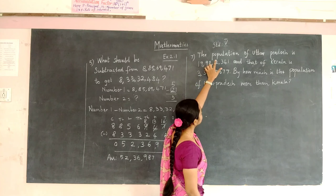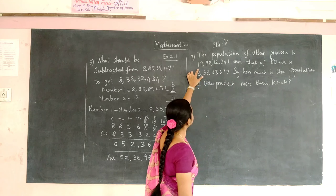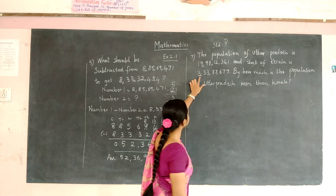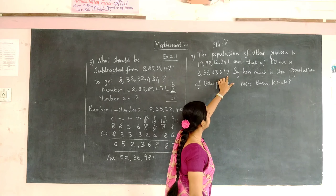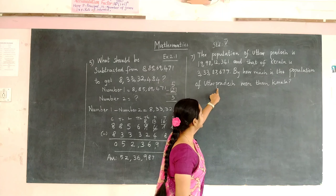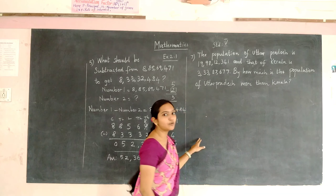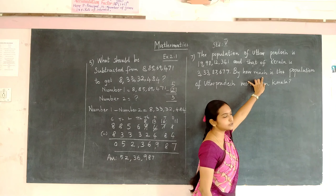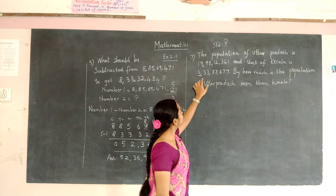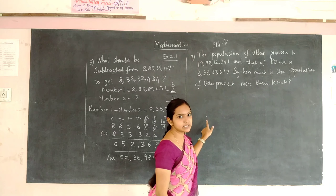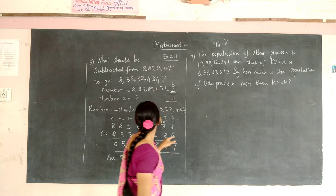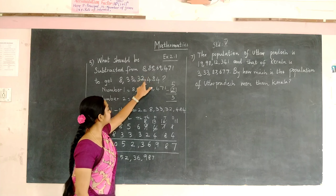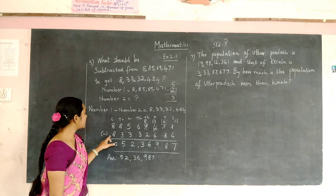The next problem: the population of Uttar Pradesh is 19 crore 98,12,341 and that of Kerala is 3 crore 33,87,677. By how much is the population of Uttar Pradesh more than Kerala? We have to find how much the population of Uttar Pradesh is more than Kerala. When the question says 'how much more,' we have to subtract the two numbers — write the greater number first and the smaller number second.